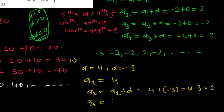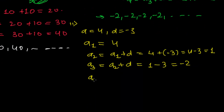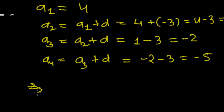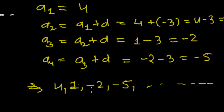And again, the third term is the addition of the common difference to the second term. So second term plus common difference — the second term is one, and the common difference is minus three. So one plus minus three, that is minus two. And again, the fourth term is the addition of the common difference to the third term. So the third term is minus two, and adding the common difference, that is negative three — so minus two minus three, that is minus five. So we got all the values. Our AP is: 4, 1, minus two, minus five, and so on. This is our required AP.